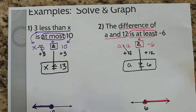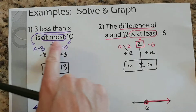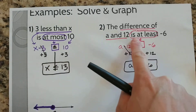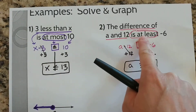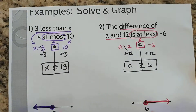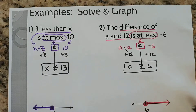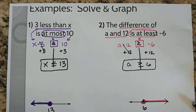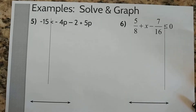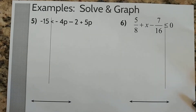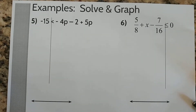So there we have a couple examples using the words "at most" and "at least." Sometimes those are a little tricky to figure out what inequality symbol they represent. Let's try a couple more examples.